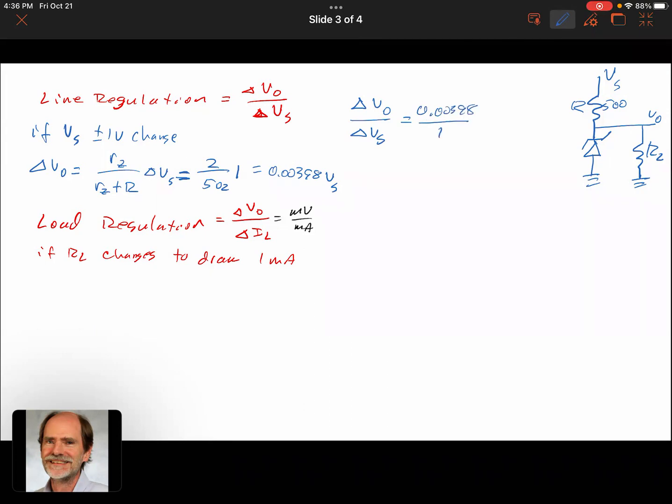And so in that case, the change in Vout over the change in Vs would be 0.00398 for 1 volt change, or 3.98 millivolts per volt. That's a really good job of reducing variation. You wouldn't expect your voltage source to have a range of 1 volt, but if it did, the output Vout, this reference right here, which is what we usually use Zeners for, would only change by 3 or 4 millivolts—a tremendous improvement in the variation in that output.